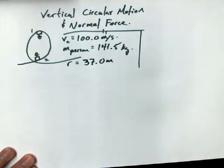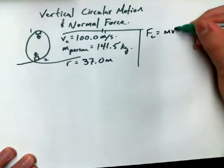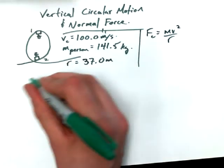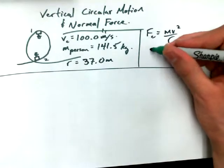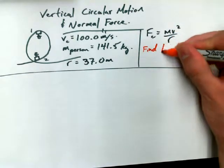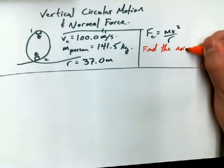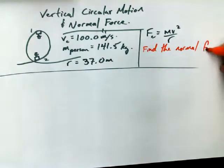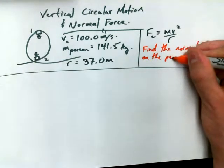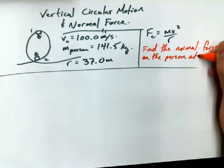100 meters per second. I want to remind you that Fc is equal to mv squared over r. And there's two things that we want to look at here. We want to find, and I'll just write it here, find the normal force on the person at the top and bottom.